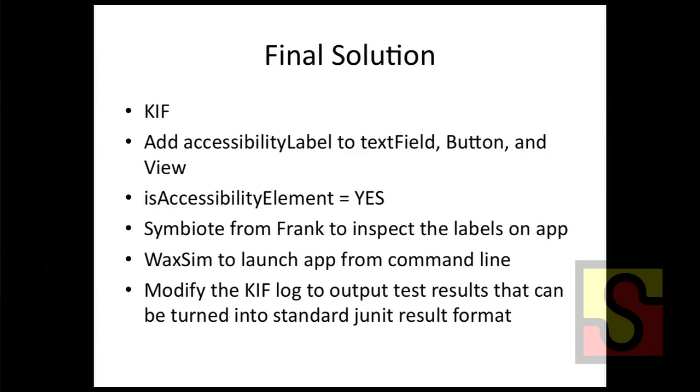So the final solution: use KIF, add accessibility labels to all your text fields, buttons, and views, and set isAccessibilityElement to YES for your views and buttons. I actually took one thing from Frank, which is the Symbiote — you can look at element labels from the browser using it. Then there's a script that helps you launch the app from the command line and kick off the tests. At the end, I modified the KIF output to generate JUnit result formats. That's it.